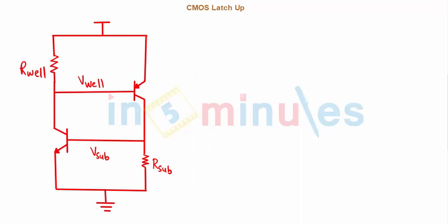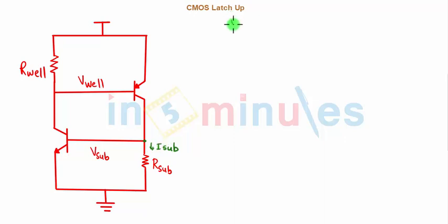Let's consider the first case: when a transient current flows into the substrate when the chip is turned on — that means there is some current I_sub flowing in the substrate. Initially, this bistable silicon controlled rectifier had both BJTs off, so nothing was happening. Because of this I_sub which starts due to the transient current when the chip is turned on, initially V_sub was equal to zero, so the NPN transistor was off.